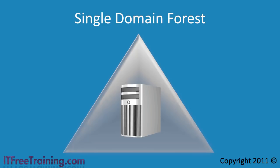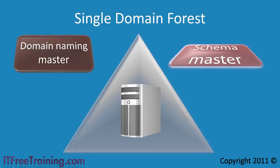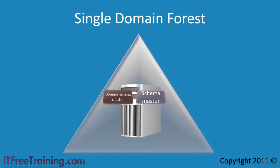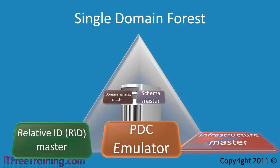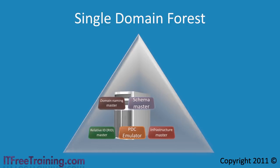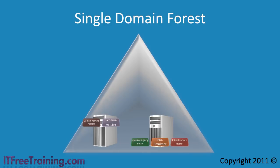Just to recap, at the forest level there are two operational master roles: domain naming master and schema master. At the domain level you have three roles: the RID master, PDC emulator, and infrastructure master. When you start adding more domain controllers to your domain, you may want to move these roles to different servers. Your network layout and hardware will determine where you move these roles to.